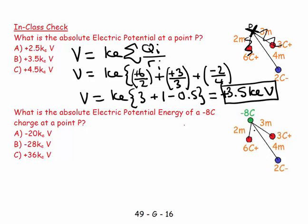What if we decide, in the same system, to put a minus 8 coulomb charge there? Then I can say, let's go back to first principles: U equals q times V.